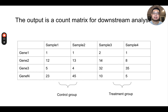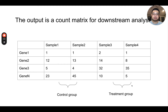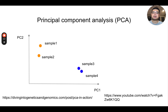The final output is a count matrix for downstream analysis. The rows will be the genes — gene 1 to gene M, which in humans is about 20,000 genes — and the columns will be the samples. In this dummy example, we have two samples for a control group and two samples from the treatment group. Even just looking at this raw count table, you can see gene N has higher expression in the treatment group, and gene 3 also has higher expression in the treatment group. Before doing any analysis, I always want to do a principal component analysis, or PCA.